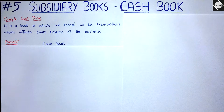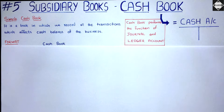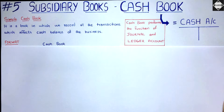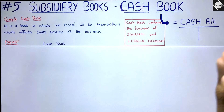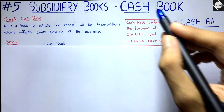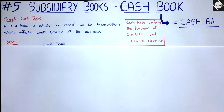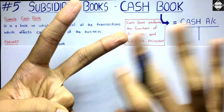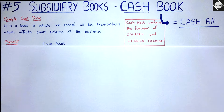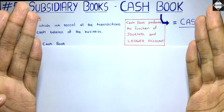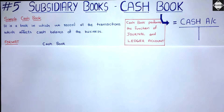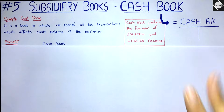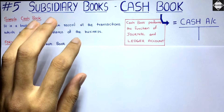There is one more important thing about the cashbook: it is equal to the cash account. The cashbook and cash account are exactly the same — the format, the way of recording, everything. The cashbook is an exception among the subsidiary books. While the purchase book is not equal to the purchase account, and the sales book is not equal to the sales account, the cashbook is an exception.